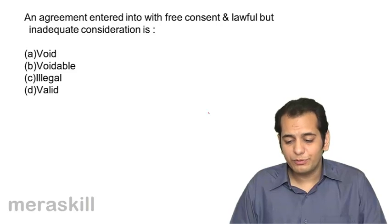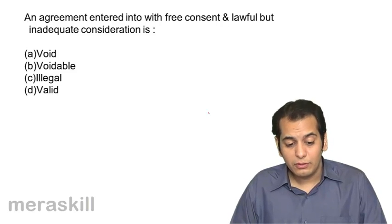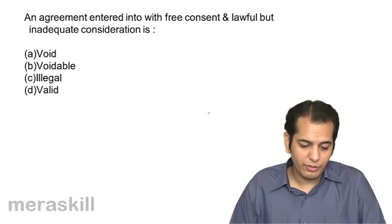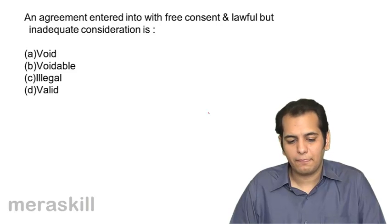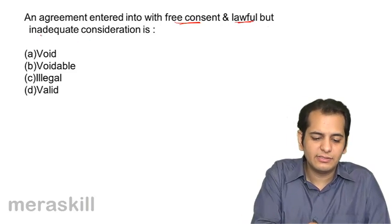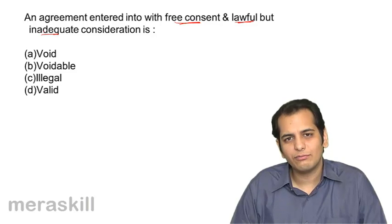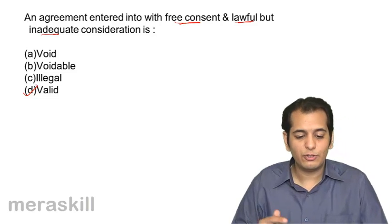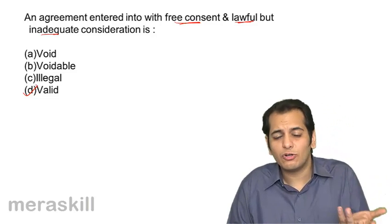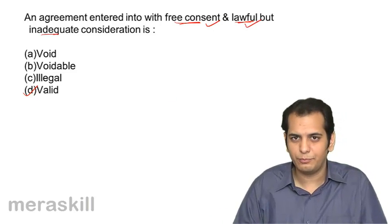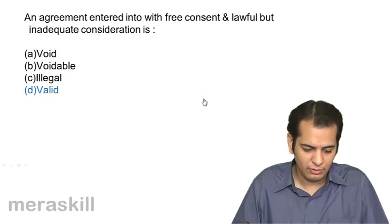An agreement entered into with free consent and lawful but inadequate consideration is: A void, B voidable, C illegal, D valid. The agreement is entered with free consent, and the consideration is lawful but inadequate. The contract is valid because adequacy of consideration is not required. What is required is that consent should be free and consideration should be lawful — both conditions are met, so the contract is valid.